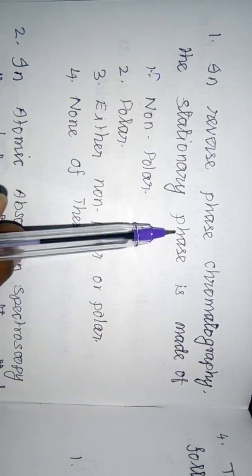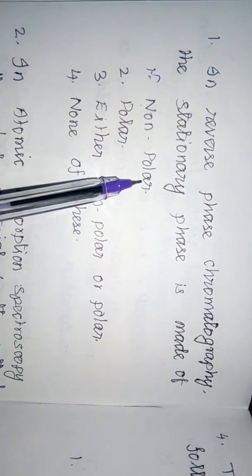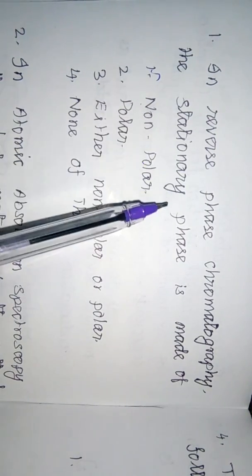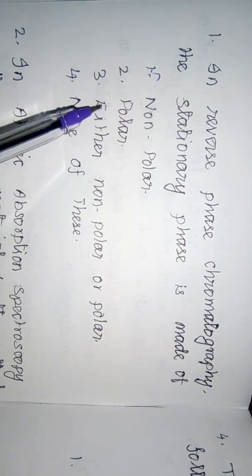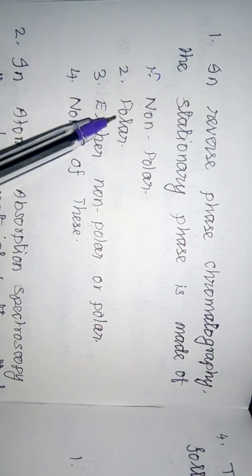In the stationary phase and the mobile phase of reverse phase chromatography, the stationary phase is made up of a non-polar substance, while the mobile phase is a polar substance. So the stationary phase of reverse phase chromatography is made up of a non-polar substance.